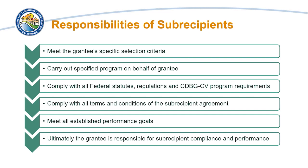All subrecipients must meet the grantee-specific selection criteria, carry out the specified program on behalf of the grantee, comply with all federal statutes, regulations, and CDBG-CV program requirements, comply with all terms and conditions of the subrecipient agreement, and meet all established performance goals. Ultimately, the grantee is responsible for subrecipient compliance and performance.